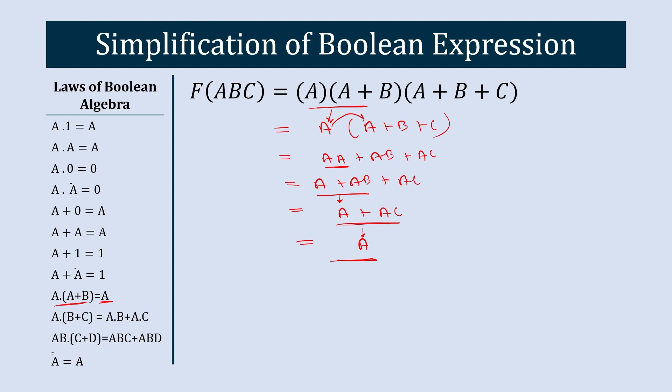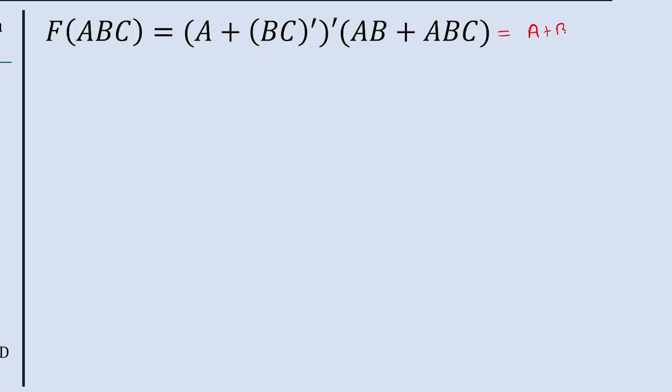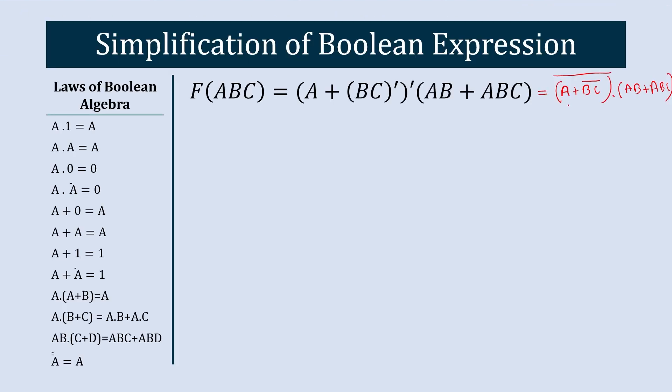Now let's jump to the next Boolean expression. The dash in this expression means 'bar'. So the equation looks like: (A plus B) bar, into AB plus ABC.